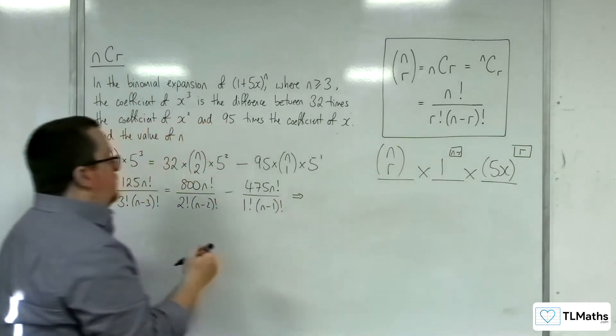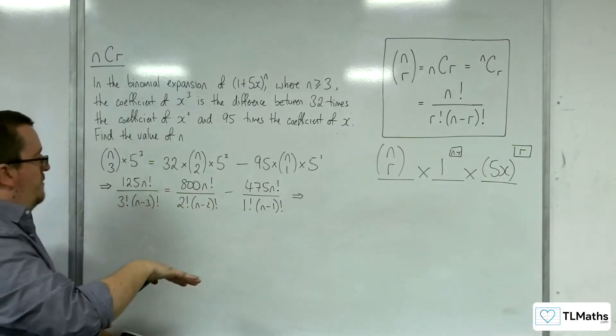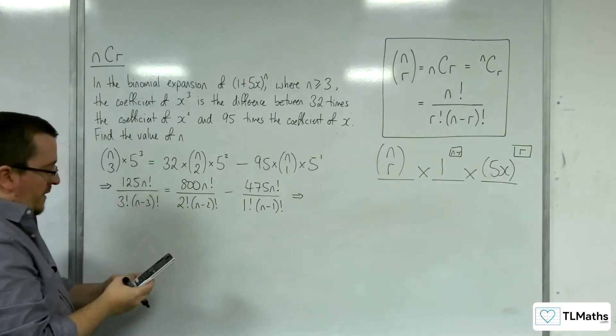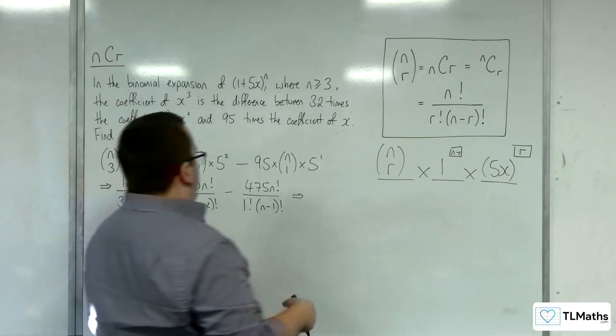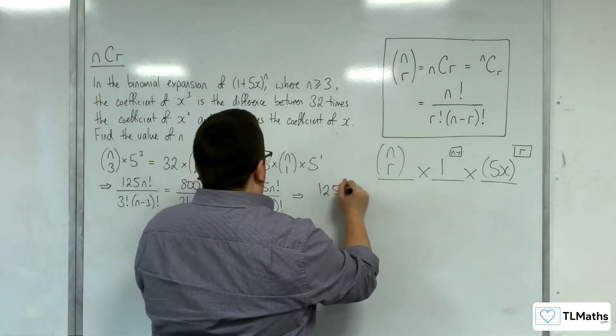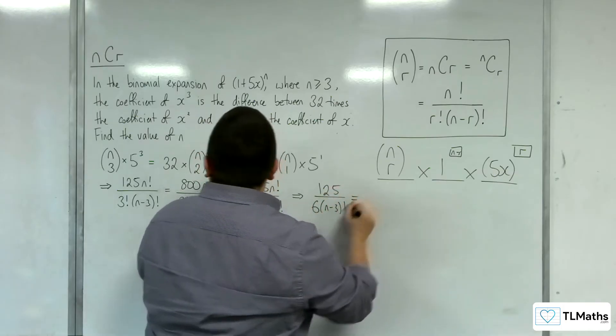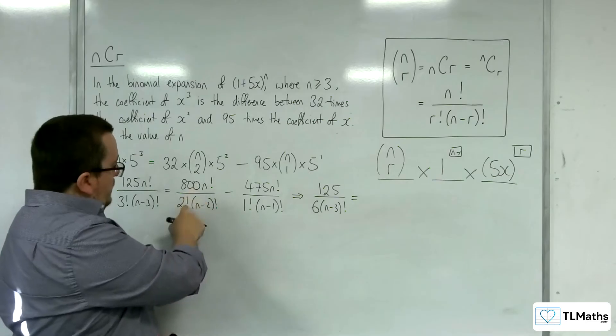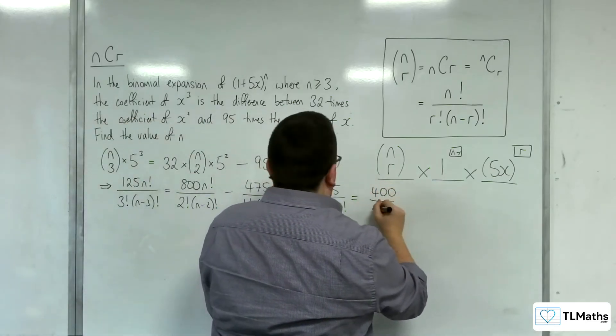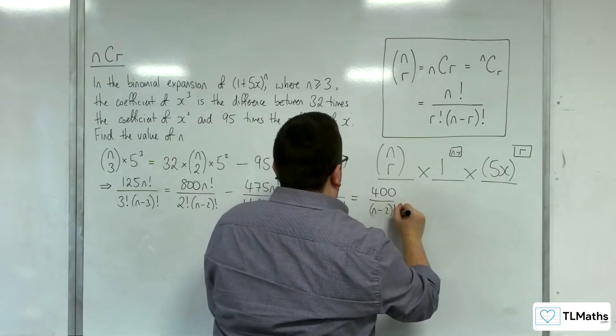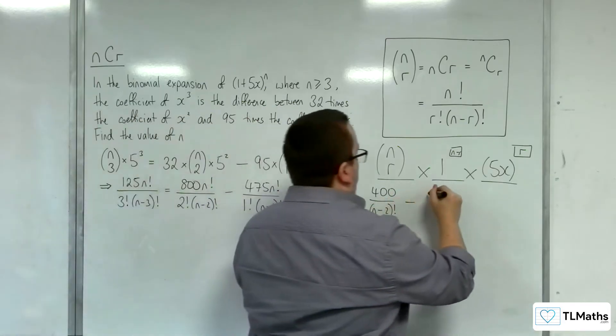Right, so just as we've done in all the other examples, we can divide through by the n factorial and I can simplify the fractions. So we've got 125 divided by 3 factorial, so 125 over 6, so 125 over 6 times n take away 3 factorial is equal to 800 divided by 2, so 400 over n take away 2 factorial, take away 475 over n minus 1 factorial.